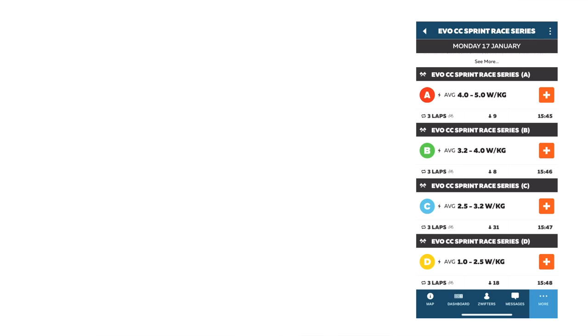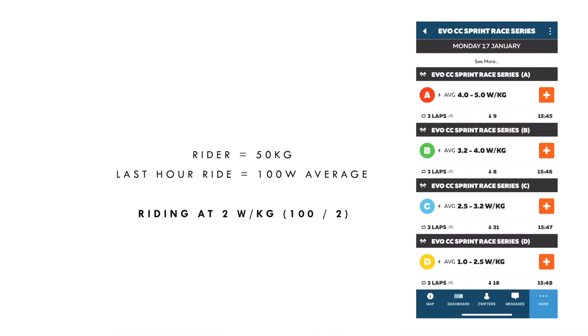How to determine what your category is: if you haven't done a race before, go back and look at what your average watts per kilo were for an hour on Zwift. Using easy numbers — if you are 50 kilograms and your last hour ride was around 100 watts, that means you were riding at two watts per kilogram, and so you'd be in category D.